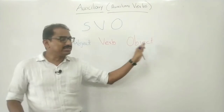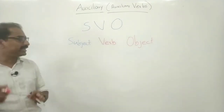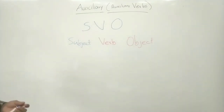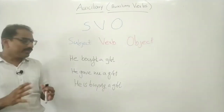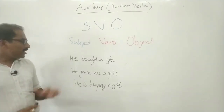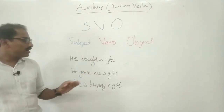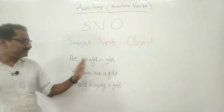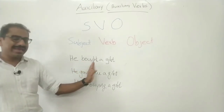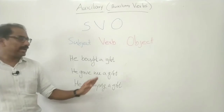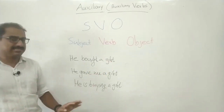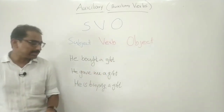The verb part of the sentence is the predicate; the other part is the subject. For example, 'He bought a gift.' He is the subject, bought is the verb, and a gift is the object. 'A' is an article, gift is the object, and 'a' is part of that object.